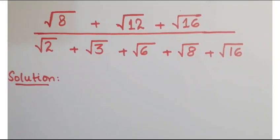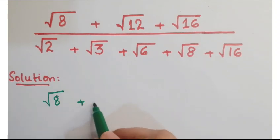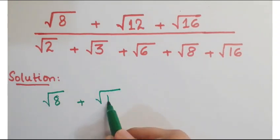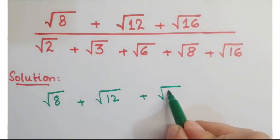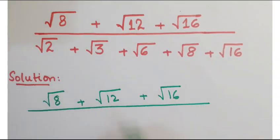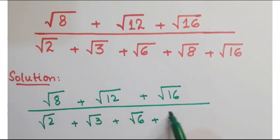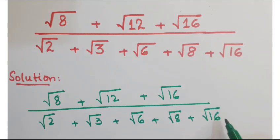Hi guys, look at this square root problem. The problem is: (√8 + √12 + √16) upon (√2 + √3 + √6 + √8 + √16).